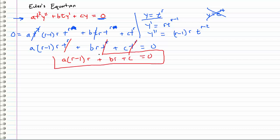So this is our characteristic equation for Euler's equation. Now we can go ahead and simplify this and find the roots. We get a r squared minus a r plus b r plus c equals zero. I'm going to rewrite that as a r squared minus a minus b times r plus c equals zero.